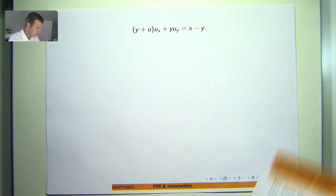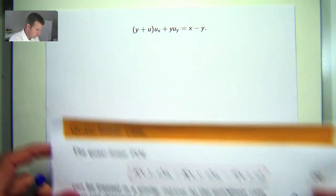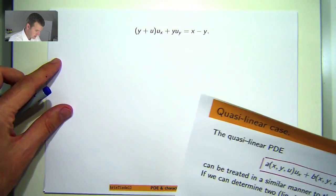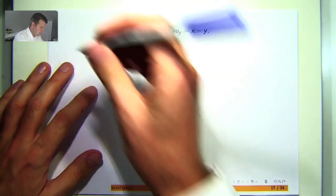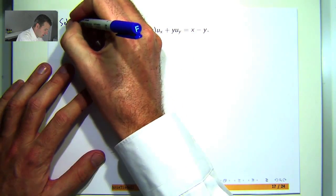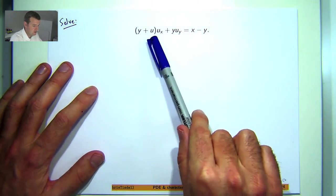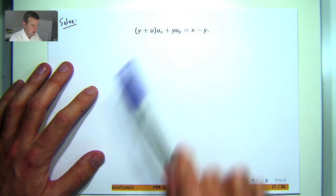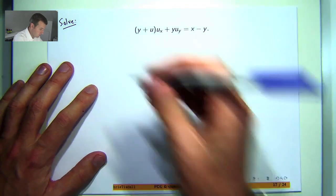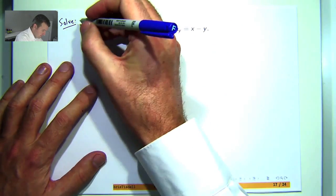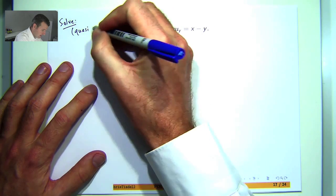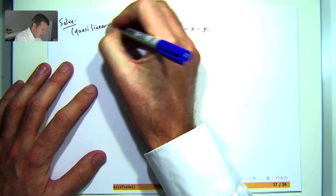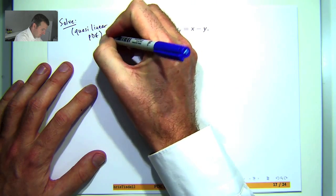Now this is the problem that we're going to look at. Here we definitely have a quasi-linear problem because this derivative has a coefficient involving U. So this is a quasi-linear PDE.